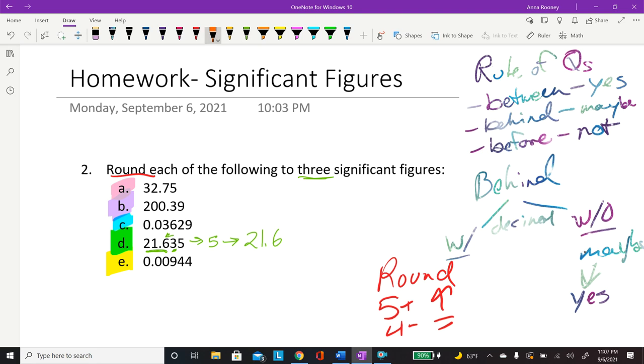And then the next one. So there are zeros. Let's look at our rule of zeros. Are these before, between, or behind? Well, these are before these numbers, so these are not significant. So you only have three numbers. And since it says round to three, you don't need to do anything except put it back down.